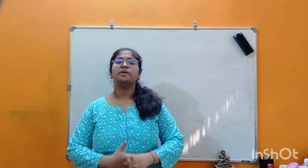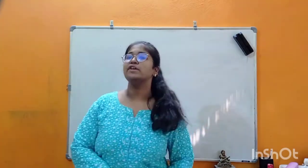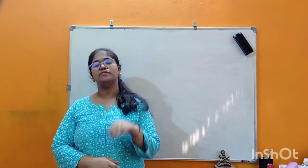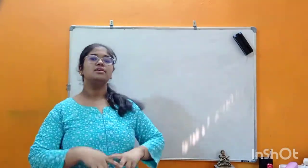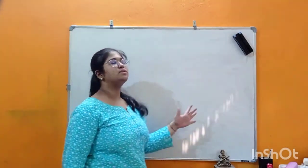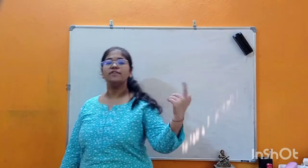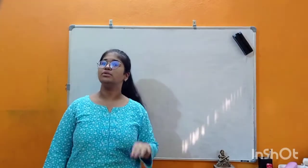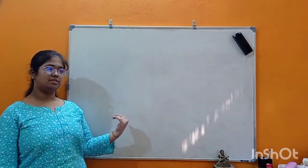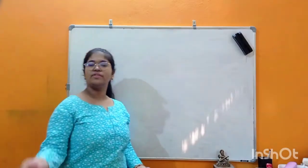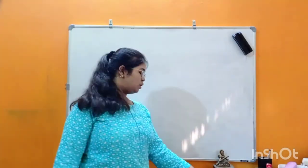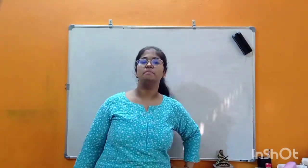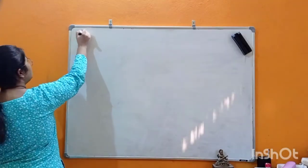Hello everyone, this is Teddy Made Simple. I am really sorry for the delay in the video series because I was busy with my exams. I assure you from now onwards there will be no delay. We are back to continue the series on complex numbers. Before starting, if you have not seen the first three videos on complex numbers, please watch them — the links are in the description box. Let's start with the fresh topic: Euler's Form of Representation.